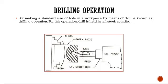Drilling operation is for making a standard size hole in a workpiece by means of a drill. The drill is held in the tailstock spindle and forced against the rotating workpiece. Initially the workpiece is held in position by means of a chuck and the axis is made in line with the drill bit, then drilling is performed.